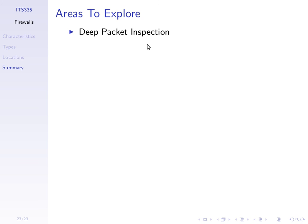One challenge with firewalls is that the firewall can make a better decision the more detail it inspects in a packet — not just the headers but also the data. However, the further it looks into the packet, the slower the firewall will be, though potentially more secure. This concept of looking deeper into the packet is called deep packet inspection, and there is a compromise between security and performance.